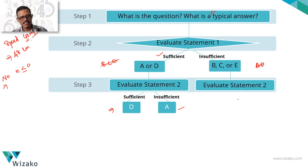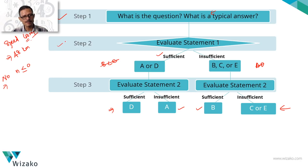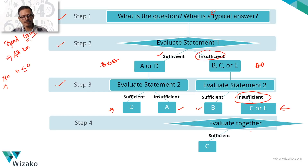If statement 1 was sufficient and statement 2 is also sufficient, the answer is D. If statement 2 is insufficient in that branch, the answer is A. If you were in the branch where statement 1 was insufficient and statement 2 is sufficient, the answer is B. If statement 2 is also insufficient, only then do you combine the two statements and check whether the answer is C or E. If combined they are sufficient, answer is C; if not, answer is E.